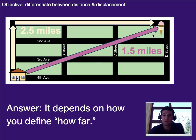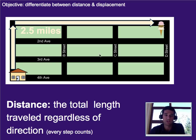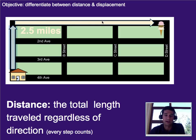The answer is, it depends on how you define 'how far.' In physics, we actually define it two different ways, and they mean different things. Distance is the two and a half miles — it's the total length you traveled regardless of direction, and every step counts. You can change directions, walk in a circle, and then finally go over there, but every step counts in this scenario.